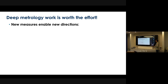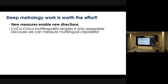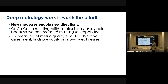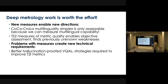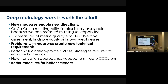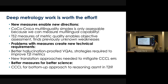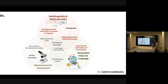This ties back into the main thesis of this talk: deep work along these measurement directions is worth it, because when we introduce new measures, they enable new directions that we hadn't considered before. We found the multilinguality simplex and the tension between bias, success, and knowledge because we were able to measure multilingual capability in the first place. When we sat down to actually measure the quality of these metrics, we found previously unknown weaknesses in the sophisticated evaluation techniques. And the problems with these measures create new technical requirements that allow us to invest in future directions. Better measures lead to better science — CocoCola gives us a bottom-up approach to reasoning assessment in text-image models.